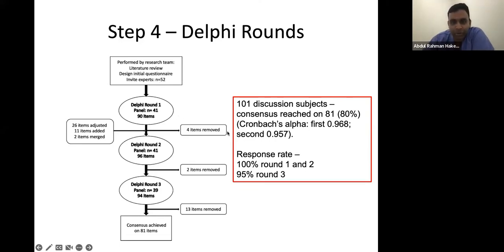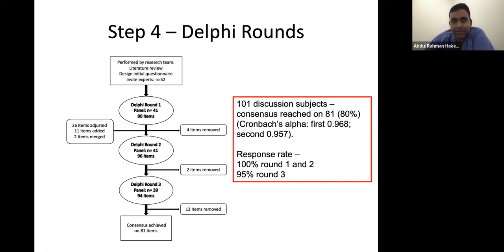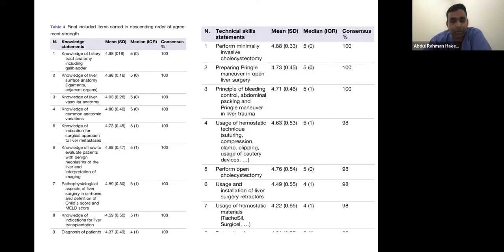They put forward the questions, and in round one, 41 experts saw the questions — initially 101 questions, narrowed to 90 items by round one. By round two, suggestions from experts brought the total to 96 items, and by round three there were 94 items. Items are removed where the experts feel they are not right to be included or where they won't reach consensus. You edit questions based on expert responses and then finally reach consensus, requiring at least 80% of experts to agree on each question. The study had four domains: knowledge questions, technical skills, attitude statements, and post-operative care statements.